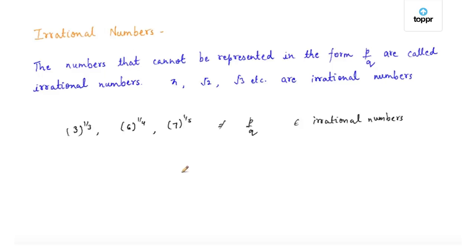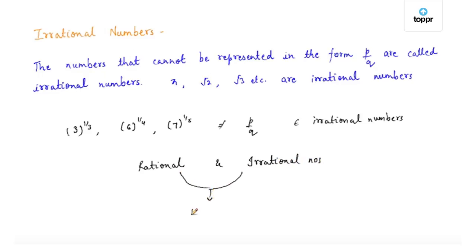Rational and irrational numbers together form the real numbers. Since every real number is represented on a real number line, irrational numbers also have a unique point on the number line. Let us now look at some of the irrational numbers on the number line.